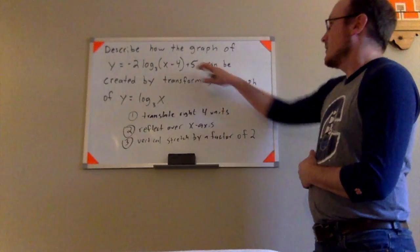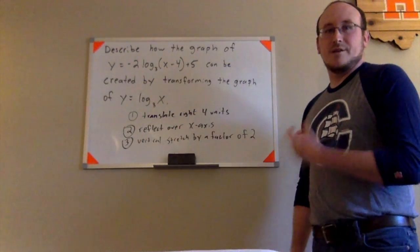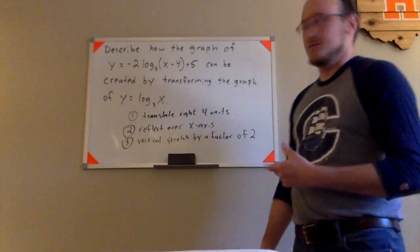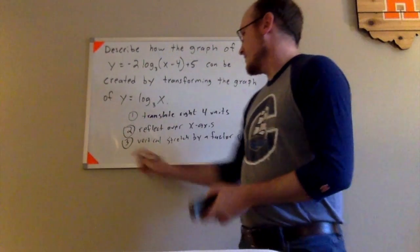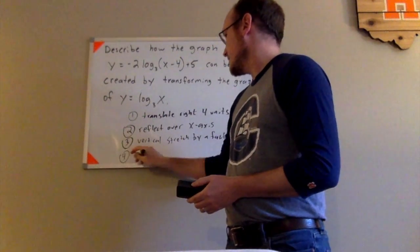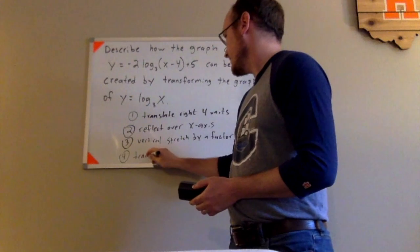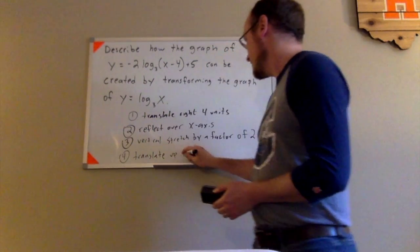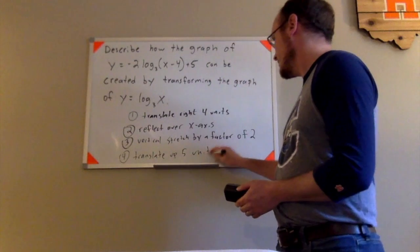And the 2 will be a vertical stretch by a factor of 2. And then finally, we're going to take a look at the plus 5 at the end. The plus 5 at the end is a vertical translation of 5 units upward. So we will translate up 5 units.